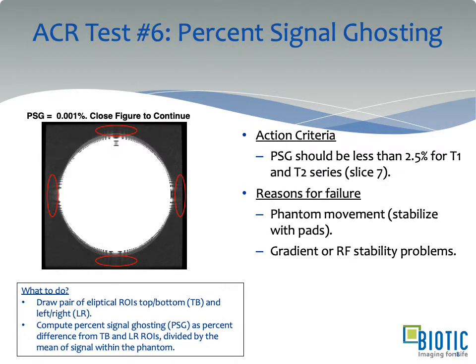Test 6 is percent image ghosting. In the phase encode direction you evaluate if there's ghosting — it should be less than 2.5%. The most common cause of failure is the phantom moving due to insufficient stabilization with pads, but it could also indicate gradient or RF stability problems. This test is very rare to fail — it's an old test and most modern magnets can defeat the threshold even with issues. We've therefore added additional stability checks beyond percent signal ghosting to evaluate these kinds of stabilities.